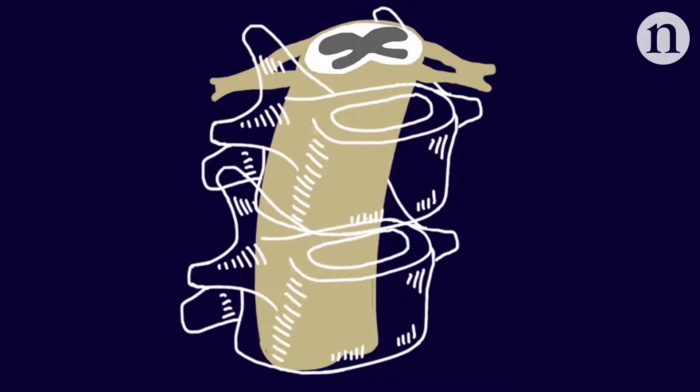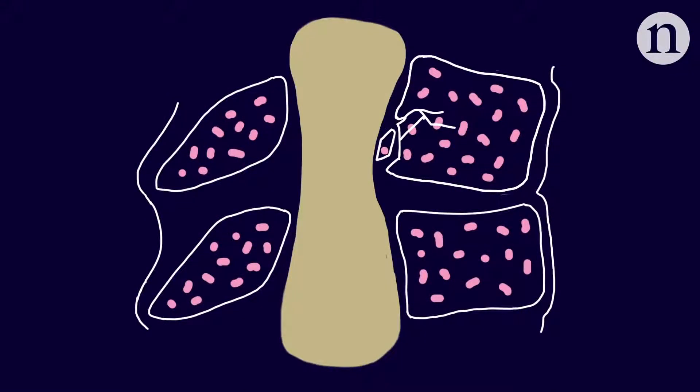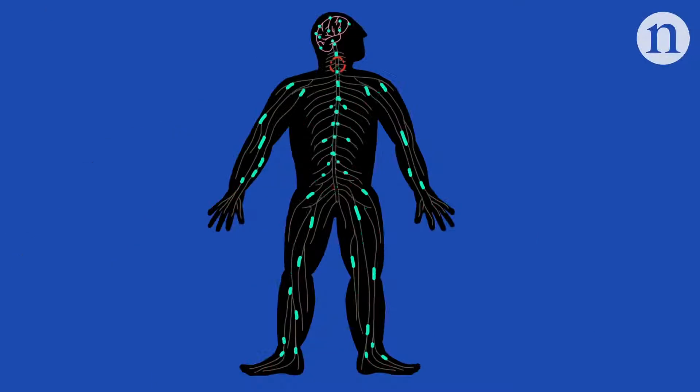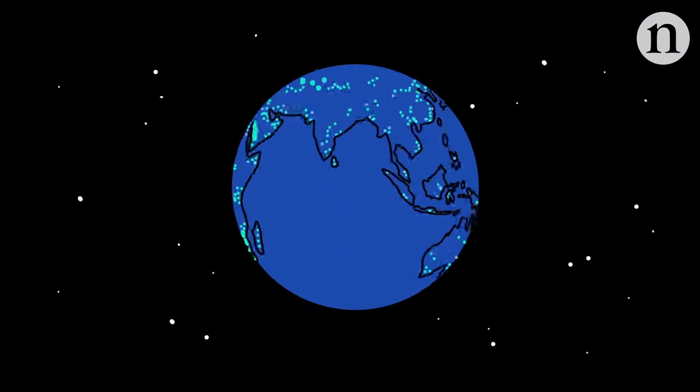This protects the cord along its length, but even this bony armour can't protect the spinal cord from the worst injuries. With enough force, this delicate cord can get damaged, cutting off all communication to and from the body below the injury site, leaving a patient paralysed. This devastating injury happens to an estimated half a million people each year across the globe.